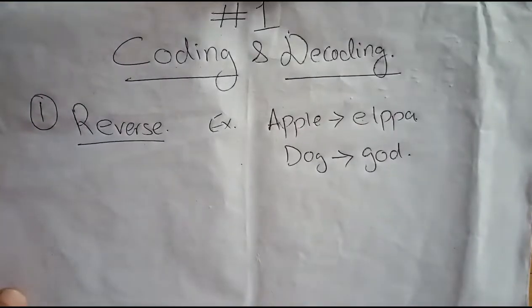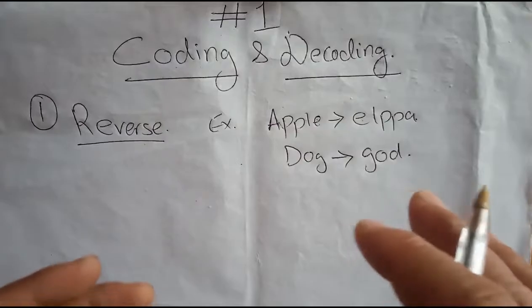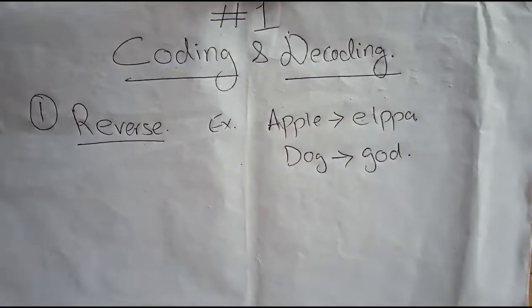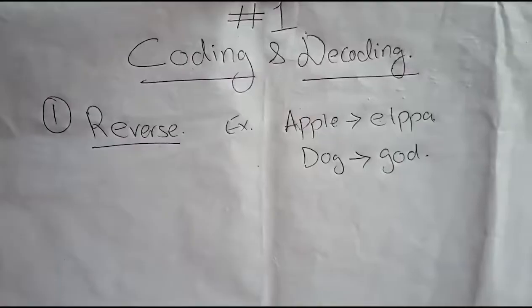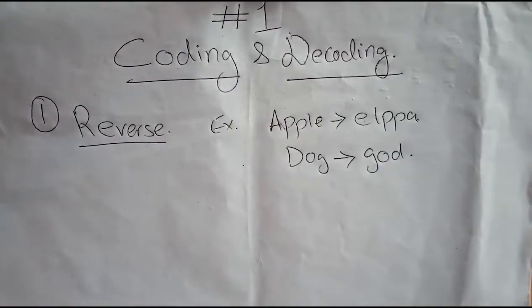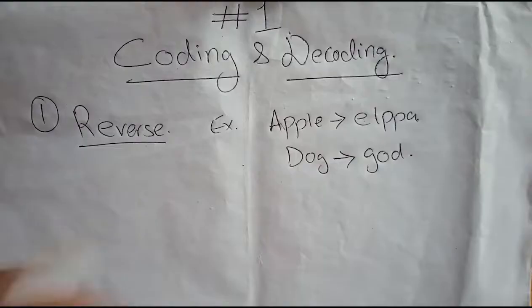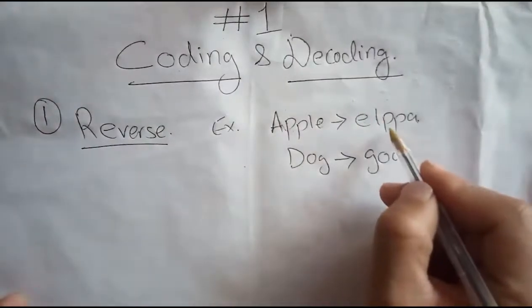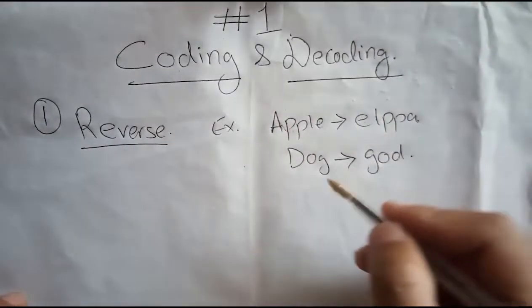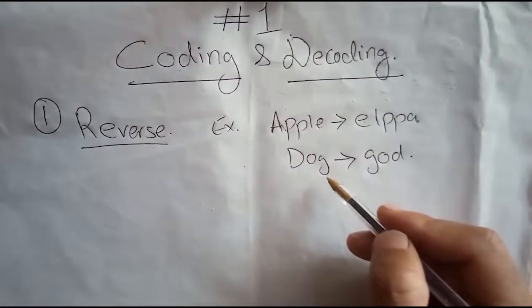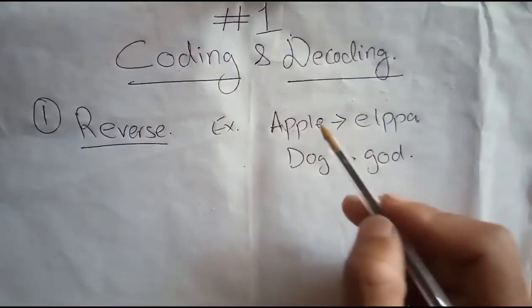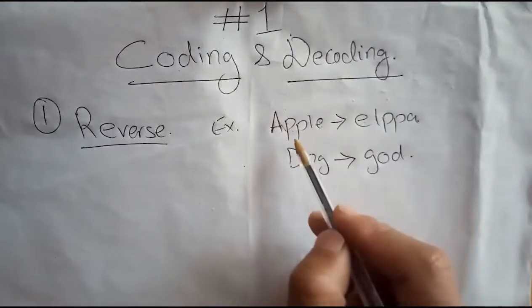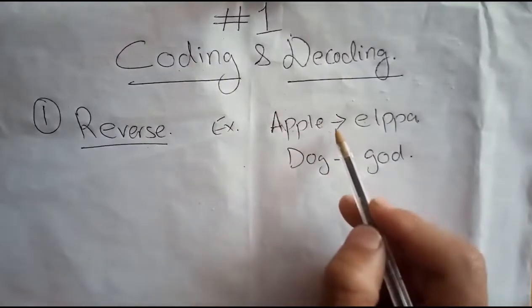At examination time, you will be given a coding and decoding question with 4 options. For example: if APPLE was coded as ELPPA, how will DOG be coded? The first thing to check is whether it is reverse coding or not. So the first type is reverse.